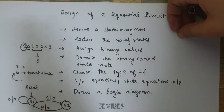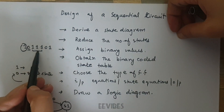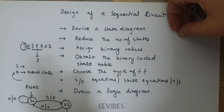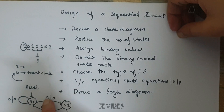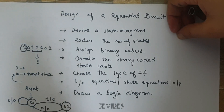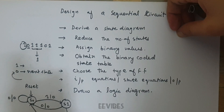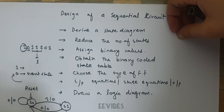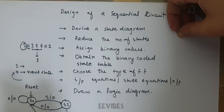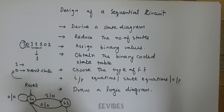From S1, if the next arriving bit is one we move to the next state with output zero, because only two consecutive ones have arrived. If at this point we encounter a zero, we go back to the reset state with output zero. When the third consecutive one arrives, we move to state S3, which represents the condition where output becomes one.